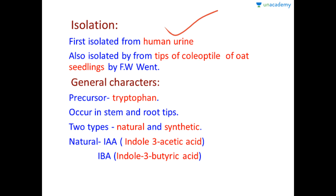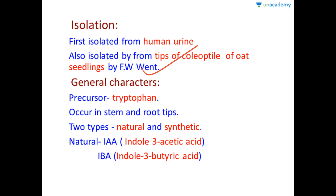Auxin was also isolated from the tips of the coleoptiles of oat seedlings by F.W. Went. He placed the tips of the oat coleoptiles in small agar blocks and let them sit for a few hours to allow the auxin to diffuse into the agar. He then collected those agar blocks and extracted the auxin from them. This was how auxin was isolated.